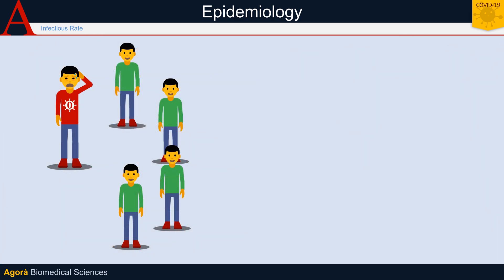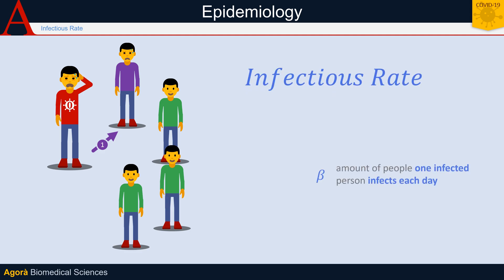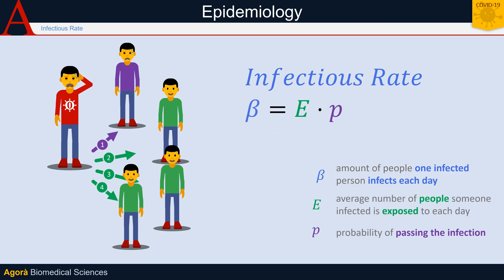At the beginning, there is only one infected person — the so-called patient zero. Let's imagine for simplicity of calculation that each infected person infects one person per day. This is the infectious rate, that is to say, the average number of people that an infected person infects every day. The infectious rate depends on the number of daily contacts of an individual, multiplied by the probability that a contact leads to contagion.